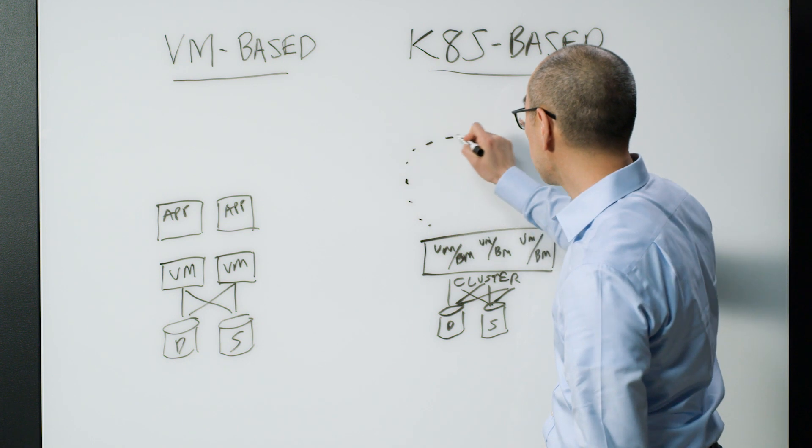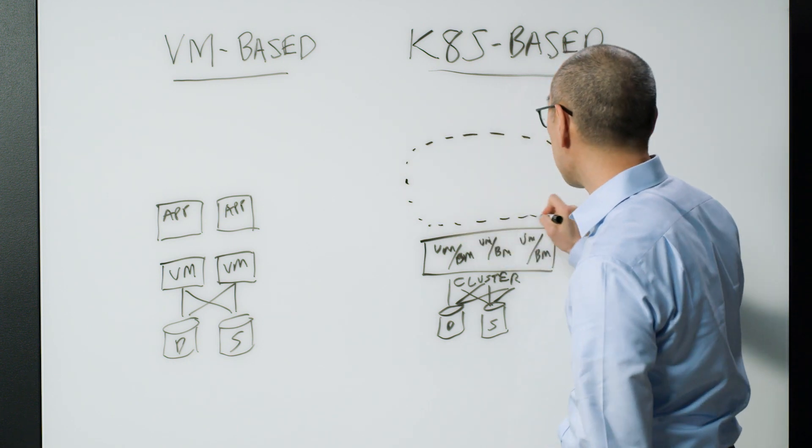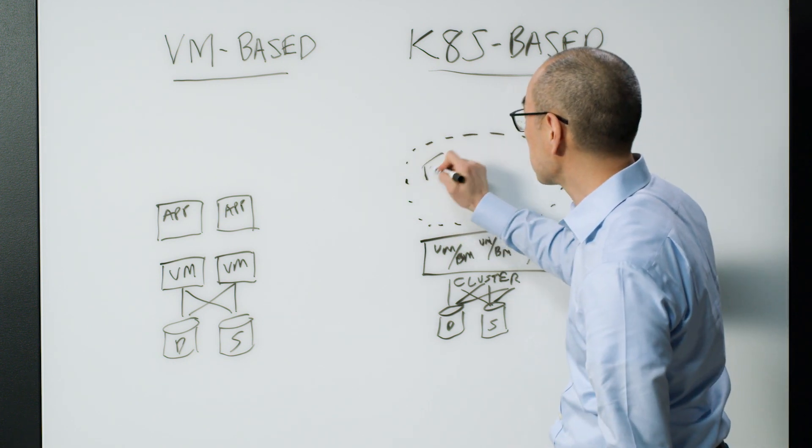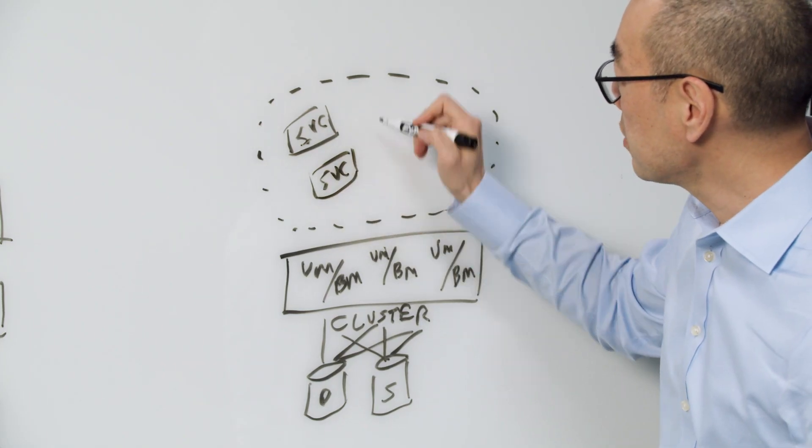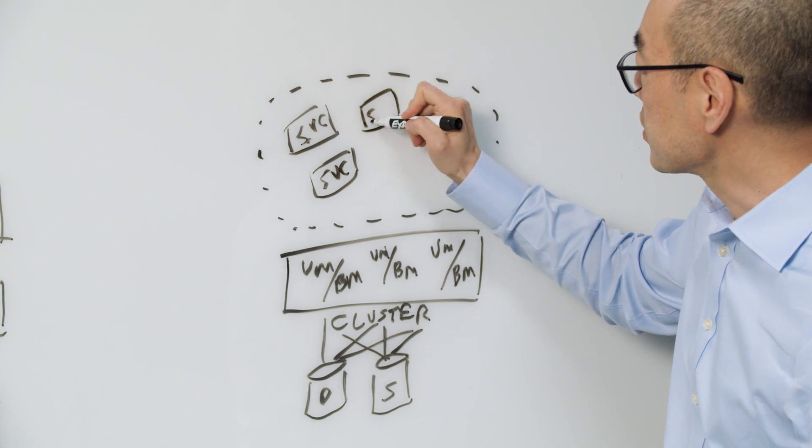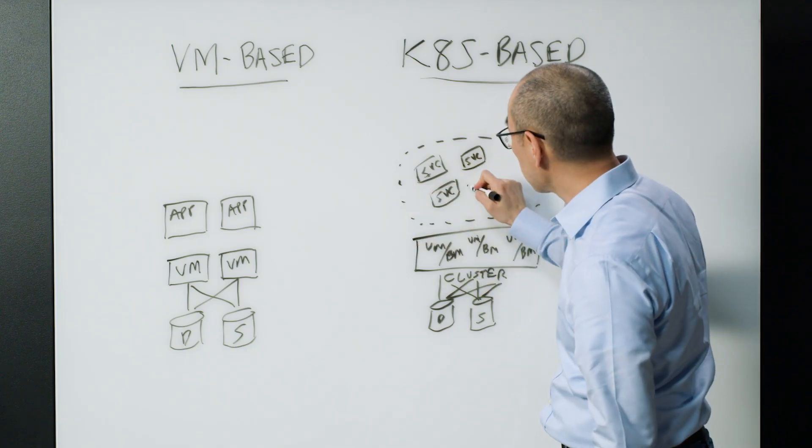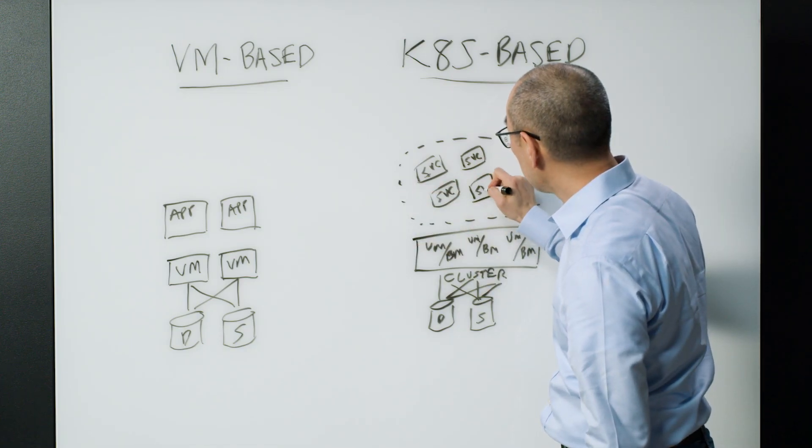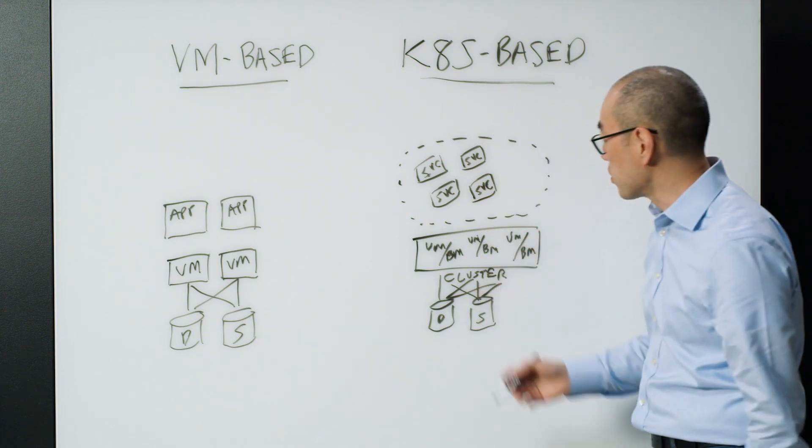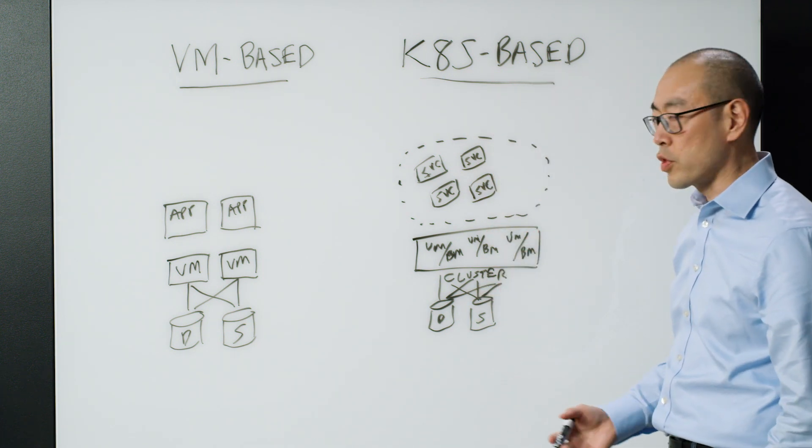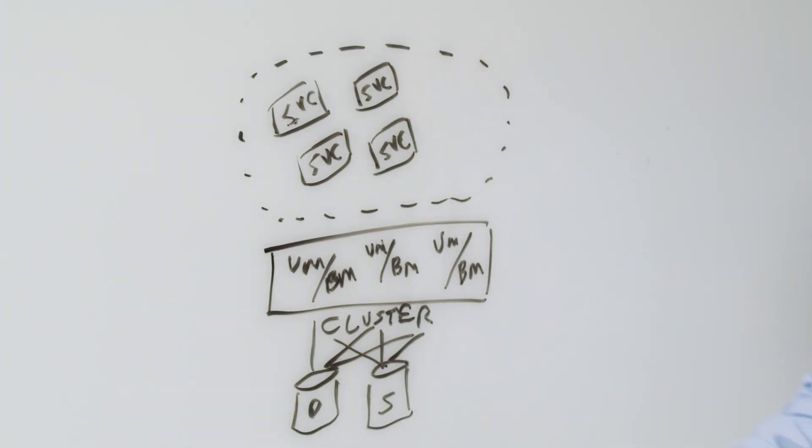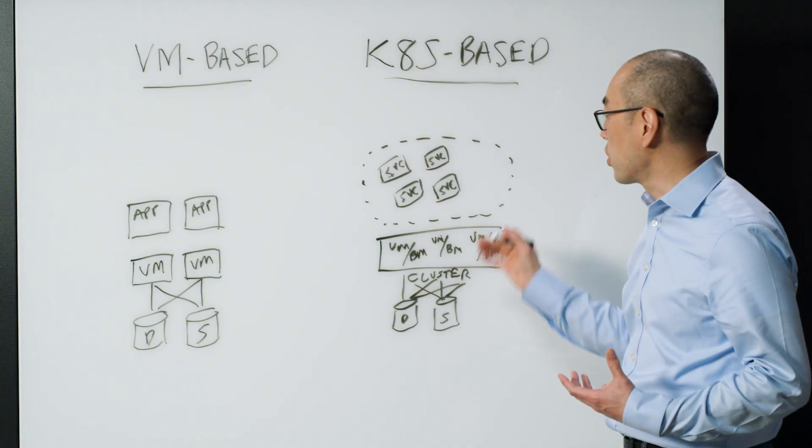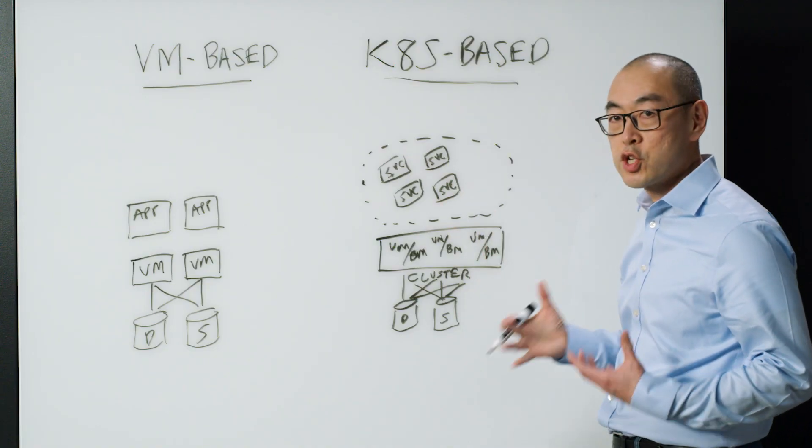A big difference is instead of deploying an entire application with all of its dependencies, part of it is you're breaking that application into individual services. You could of course do that on that side as well, but Kubernetes and containers are really built for this type of model, where you're deploying individual services inside of what are called pods, and that's your runtime. That's where you're running your application in a shared memory space.